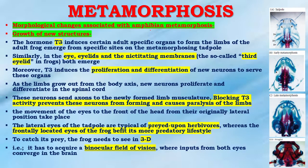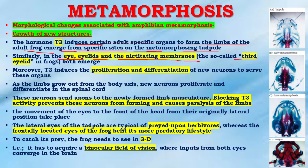Morphological changes associated with amphibian metamorphosis — number one is growth of new structures. Triiodothyronine (T3) induces certain adult-specific organs to form: the limbs of the adult frog emerge from specific sites on the metamorphosing tadpole. Similarly, in the eye, eyelids and nictitating membranes — the so-called third eyelid in frogs — both emerge. Moreover, T3 induces the proliferation and differentiation of new neurons to serve these organs.